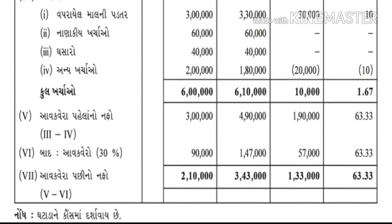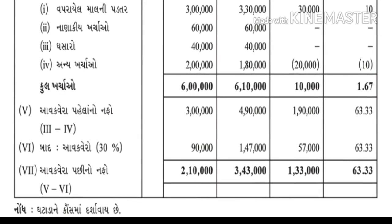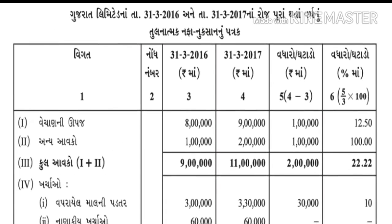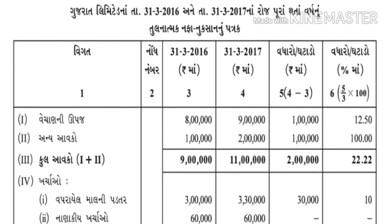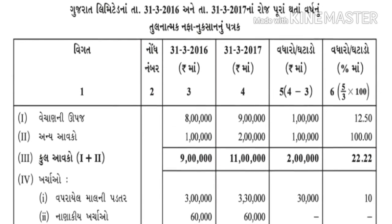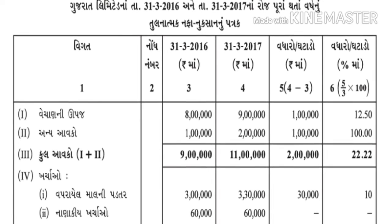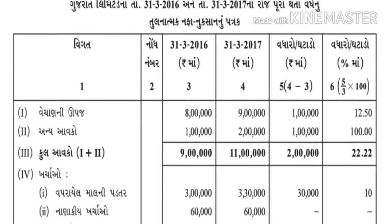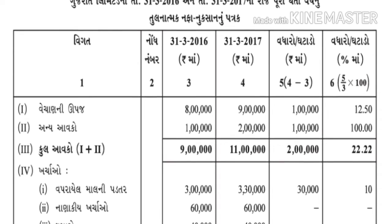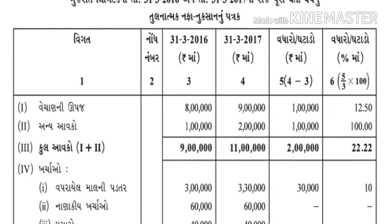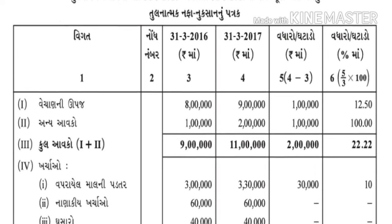એટલે સૌથી પહેલા આપણને જે રકમની માહિતી આપેલી છે, એ આપણે જે ફોર્મેટ છે - તુલનાત્મક - એના માટે તૈયાર કરી લીધા. તૈયાર કરી - ધ્યાન રાખો - આ તમારે એક-એક સ્ટેપ પાકો કરી નાખવો પડશે. 2017ની અંદર, અહીં જે રકમ - ખાનામાં.